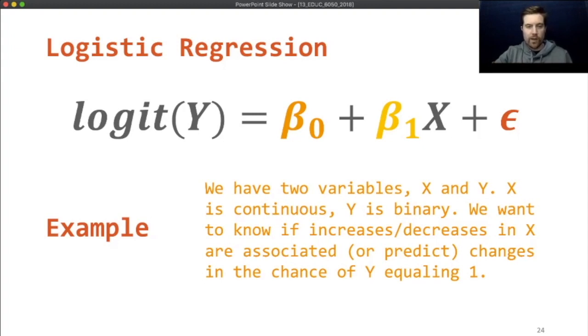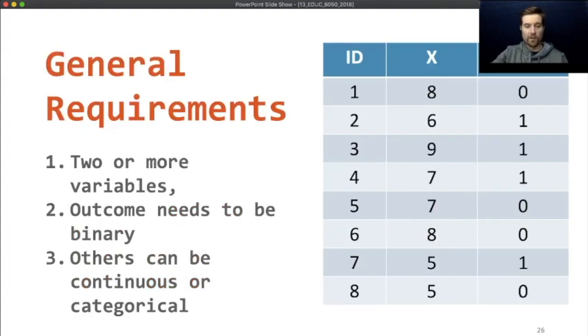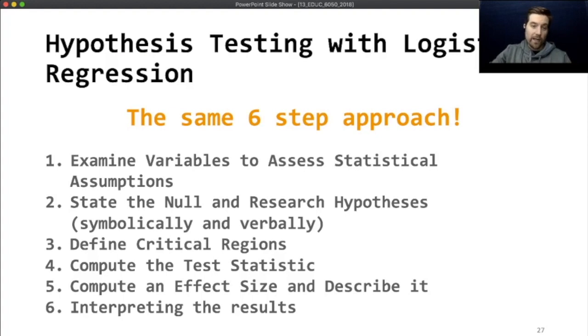This is going to look a little bit different but similar to what we did with linear regression. This other side where we have the intercept and slope that's just like linear regression. But on this other side we have this logit giving this Y hat a hug. And basically it's a mathematical function that makes it so we can use regression to understand an outcome that's binary. The last piece always is that epsilon, that's the unexplained stuff and the odds of Y. So an example of using logistic regression would be you have two variables X and Y. X may be continuous, it could be categorical as well. But Y needs to be binary. In other words it has to have two levels. The general requirements you need two or more variables. The outcome needs to be binary. And the predictors can be continuous or categorical or both. Again, we're going to use the same six step approach.